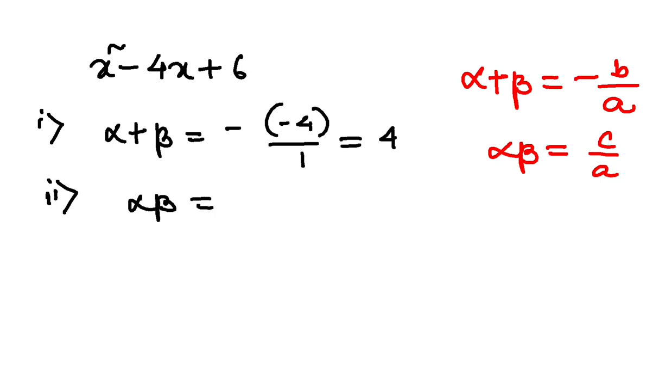Number two, alpha beta, c by a, that is 6 by 1, which is 6. So these are very straightforward. After that, interesting things will start.